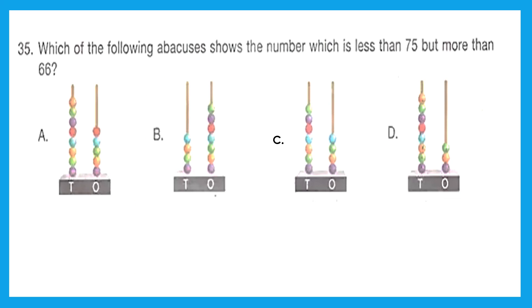Question 35: Which of the following abacus shows a number which is less than 75 but more than 66? Okay, let's see the abacus. So A is giving us 85—oh, it's not less than 75, so it is not the correct answer. B will give us 47—okay, so it is less than 75, but it's not more than 66, so it is also not correct. C is 74—it is less than 75 and it is more than 66. I think we got our answer, but let's see D also. D is 83, that is incorrect. So option C, 74 is the right answer.